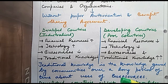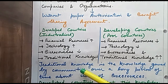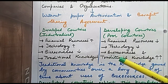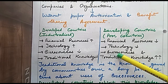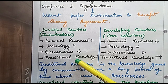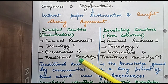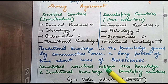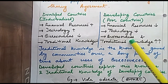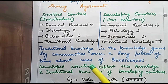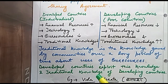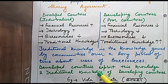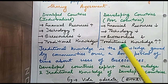There are many examples of traditional knowledge held by communities and local people. Developing countries have more traditional knowledge and more bioresources compared to developed countries. So what are developed countries doing? They are exploiting the traditional knowledge and bioresources of developing countries.